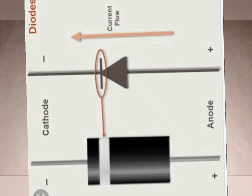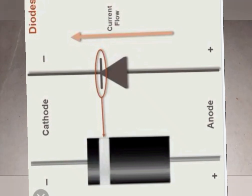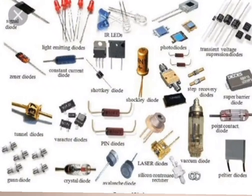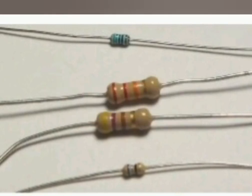Now diodes — you cannot avoid using a diode when you want to make a charger or anything to do with electronics. The main function of a diode is to direct current in one direction. Although there are many types of diodes — we have light emitting diodes and others — we will be talking about all of them as we go.